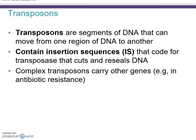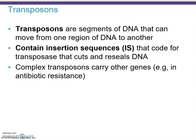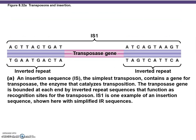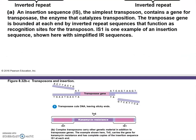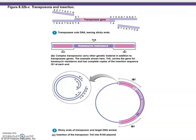Transposons by definition are segments of DNA that can move from one region of DNA to another. They contain insertion sequences that code for transposases, which cut and reseal the DNA. Complex transposons carry other genes. Here we have an example of a transposon insertion — a disposable gene inserted in a specific region, illustrating transposons and insertions.